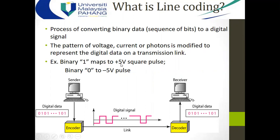For example, binary 1 can be mapped to a positive 5-volt square pulse, or 0 can be negative 5 volts — it depends on which line coding we are using. For example, for digital data 0101101, here is the line encoder. This can be converted so that 0 means negative 5, 1 means positive 5, and so on. The data will go to the receiver side where there will be a decoder to decode this line code and reconvert the voltage square wave back into binary bits to transmit to the sink or receiver.